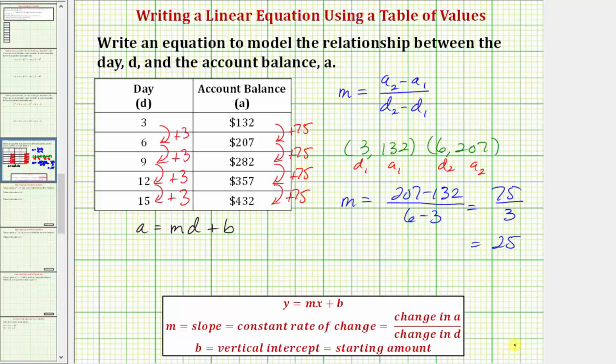So this 25 tells us the account balance is increasing by 25 dollars each day. So going back to our equation, we now know that A equals 25 times D plus B. Now we need to find the value of B.